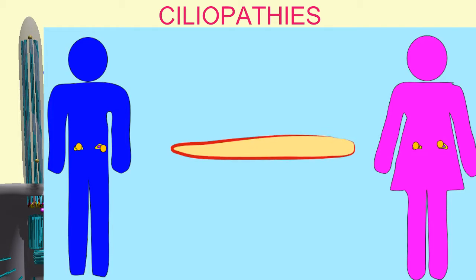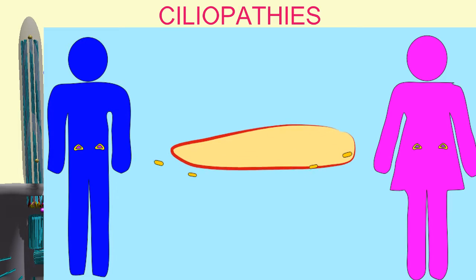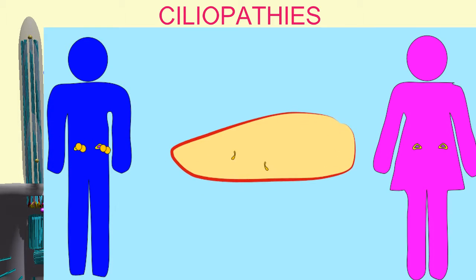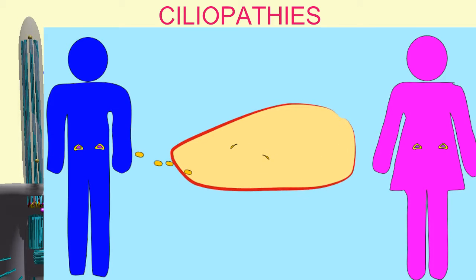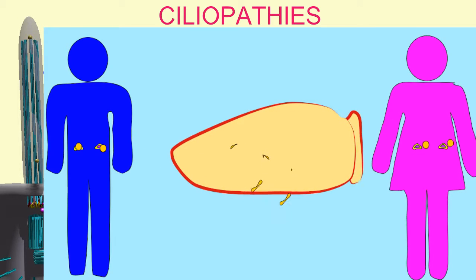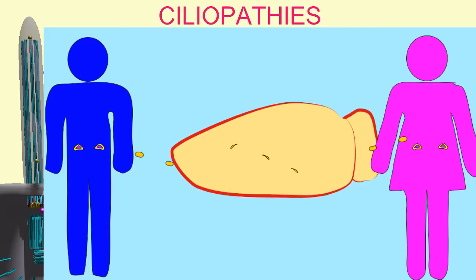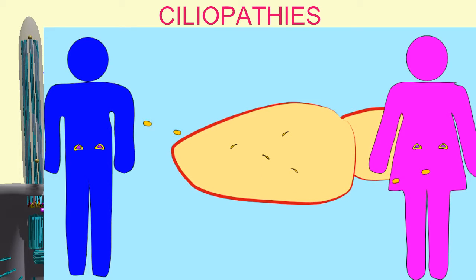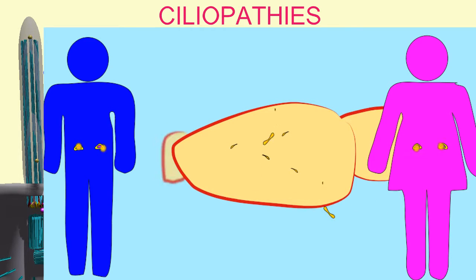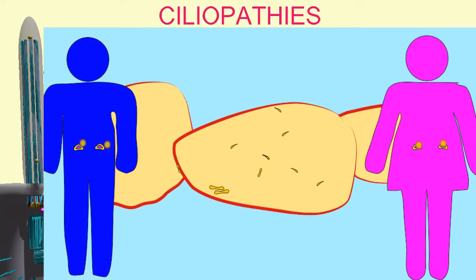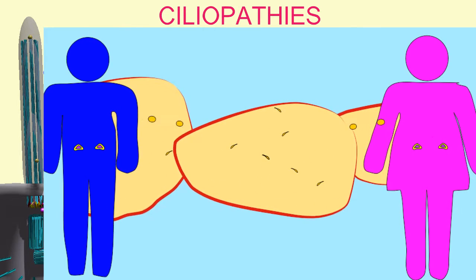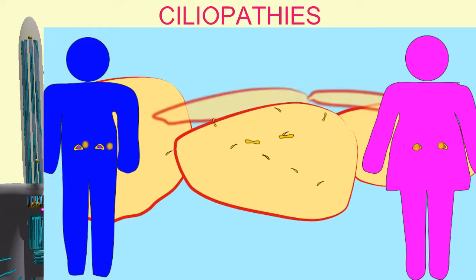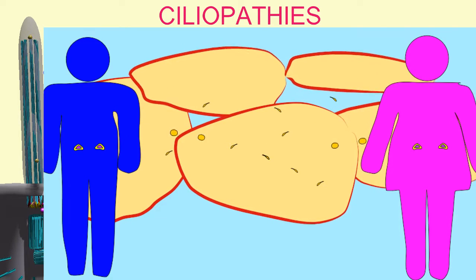Many of these ciliopathies are associated with obesity, and it can be noted that the primary cilia change over the course of the differentiation of fat cells.